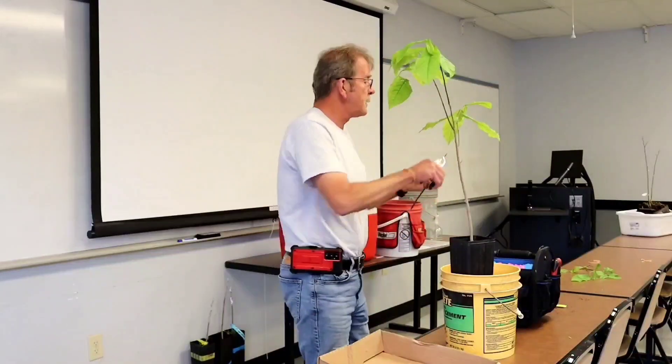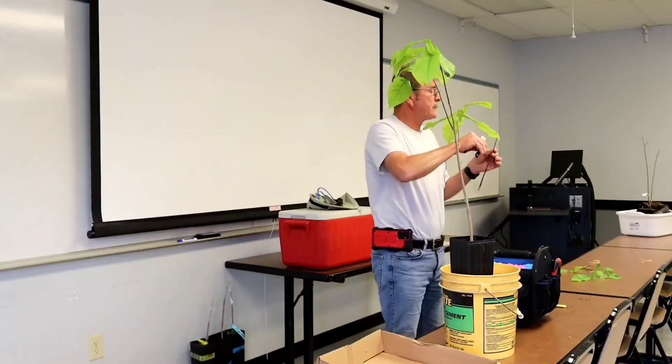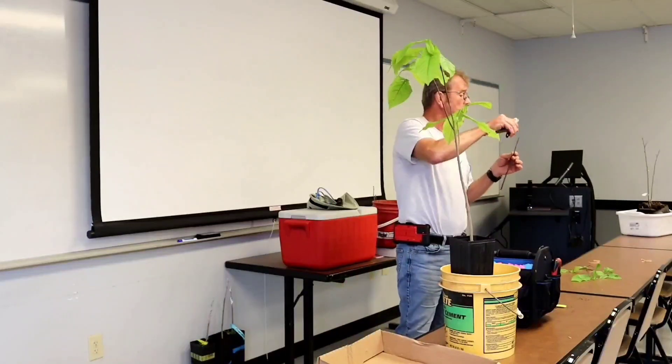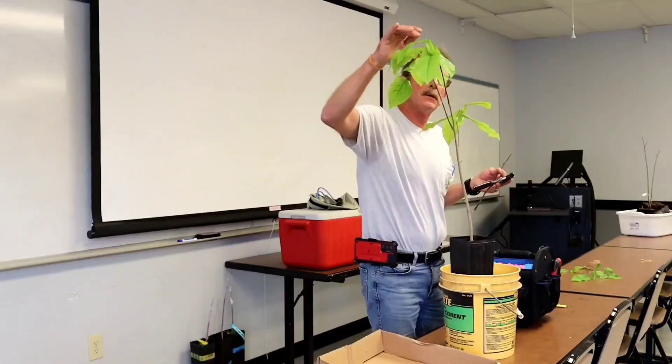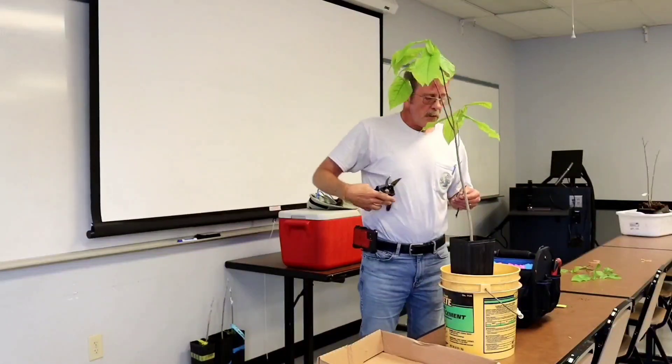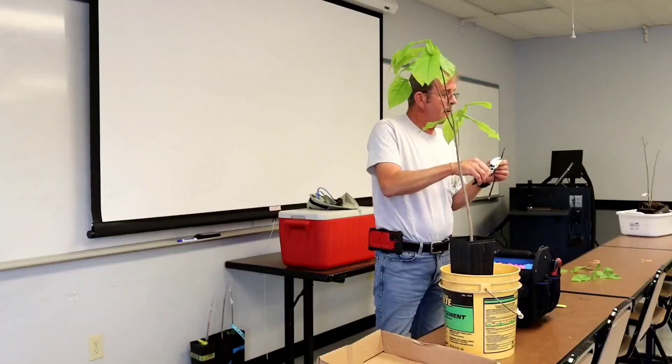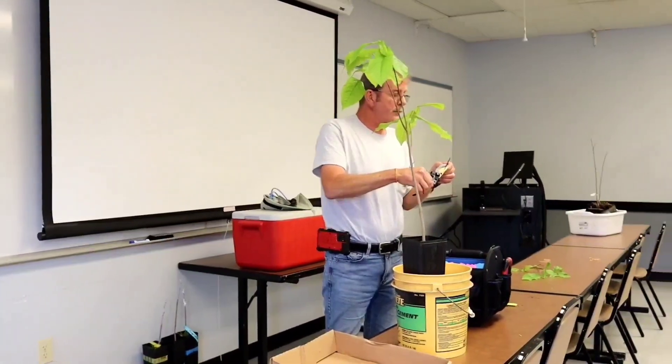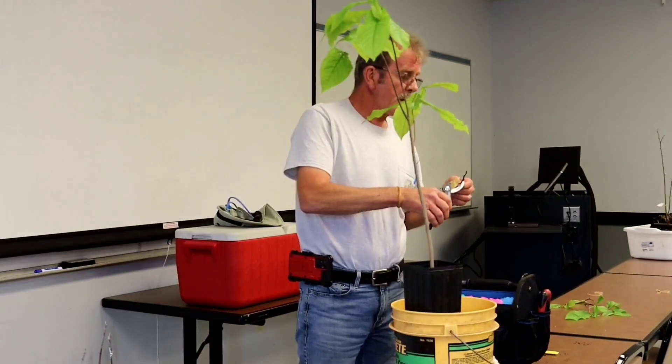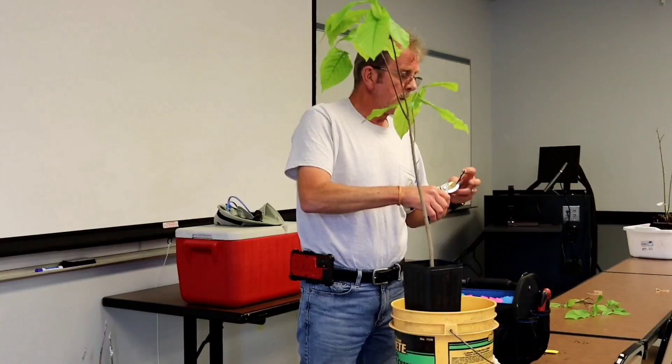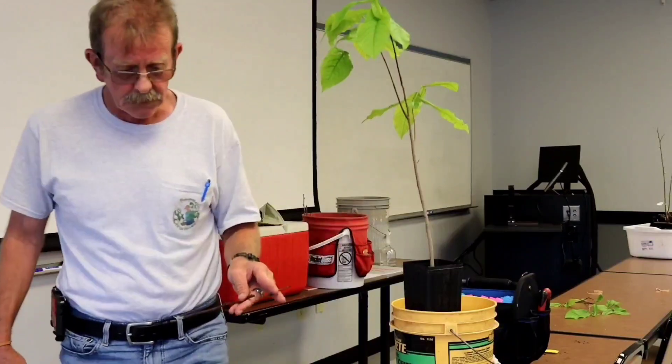Right here at the very end of this piece of scion wood is what they call the terminal bud. This is where it will keep growing. What I'm going to do is I'm going to utilize the terminal bud - not the terminal bud, but the very end just for demonstration because I try not to get too small.